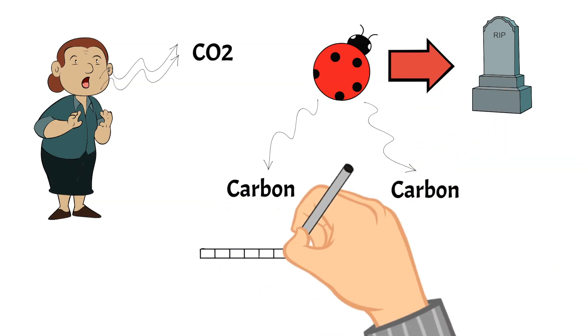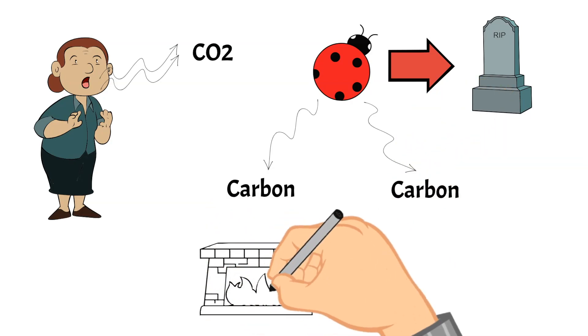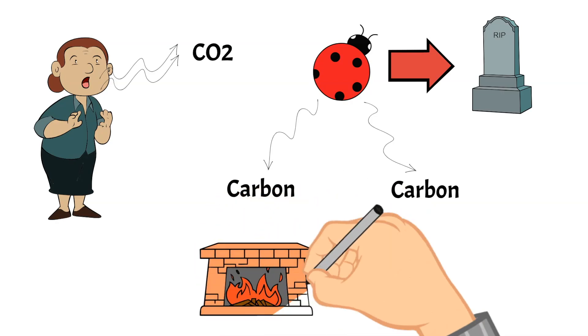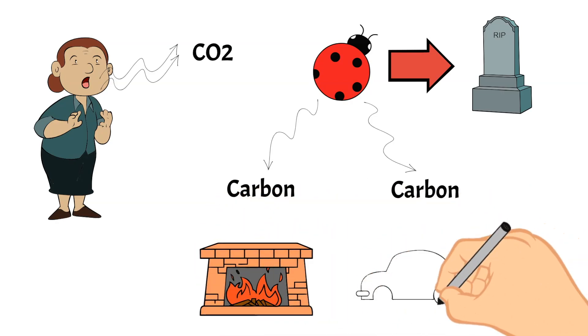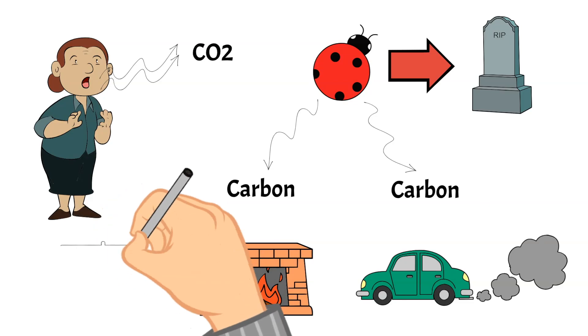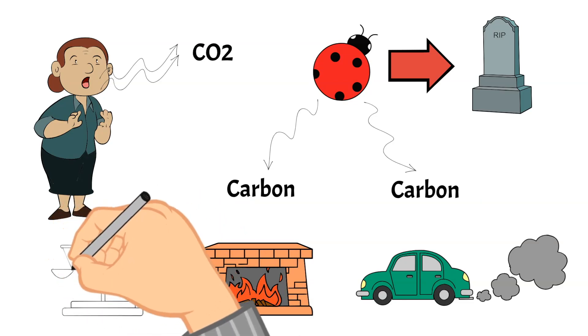A last way that we see carbon entering the atmosphere is when plants, trees, or fossil fuels are burned. Carbon is essential for life, and nature truly does a great job of balancing carbon in the carbon cycle.